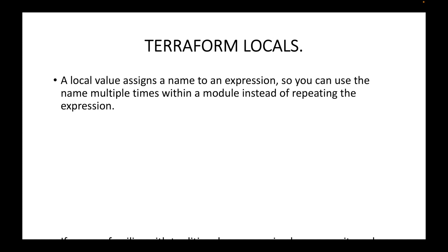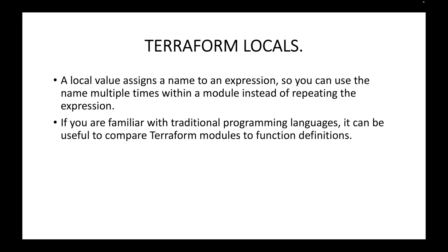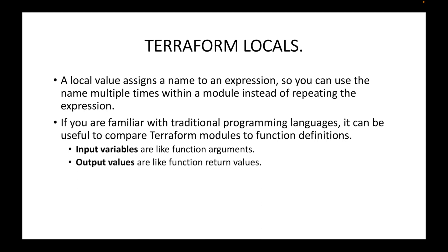If you're familiar with traditional programming languages, it can be useful to compare Terraform modules to function definitions. We have input variables which are like function arguments - we've already looked at how input variables can be used to avoid hard-coding values like the AMI, instance type, or security group ID. We have output values which are like a function's return value, used to expose information. And we have local values which act like a function's temporary local variable - declared once and usable multiple times within configuration files.